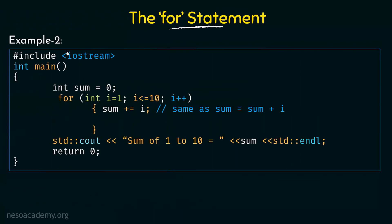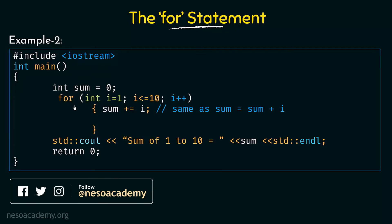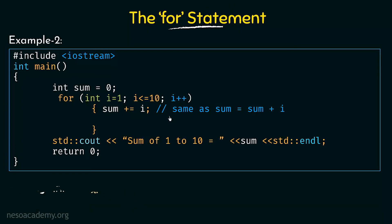Now let's take another example. We want to print the sum of all values from 1 to 10 — that means 1 + 2 + 3 up to 10 — using the for loop. In the previous lecture we did this using the while loop. Here we declare and initialize a variable 'sum' of type integer equal to 0. Inside the for loop, we initialize i equal to 1, check the condition i less than or equal to 10, and have a counter i++. The statement inside is 'sum += i', which is the same as writing sum = sum + i.